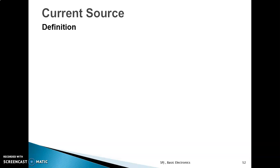In the last lecture, we saw different types of sources. There are two types of sources: current source and voltage source. We covered the ideal and practical voltage source. In this lecture, we will see the ideal and practical current source.